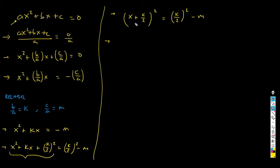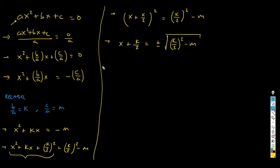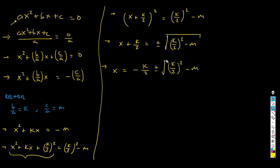Now, at this point, everything is very easy. We just take the square root on both sides, and we get x plus k over 2 equals plus or minus the square root of all of the right side. And finally, the last step is isolating x from the left side. And I'm going to get minus k over 2, plus or minus the square root that I have on this side. And guys, we are completely done.